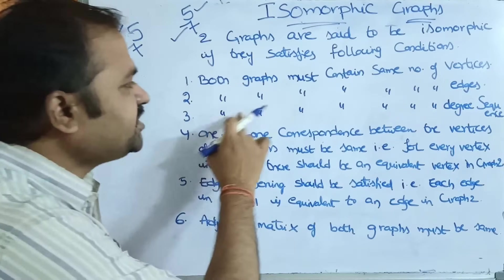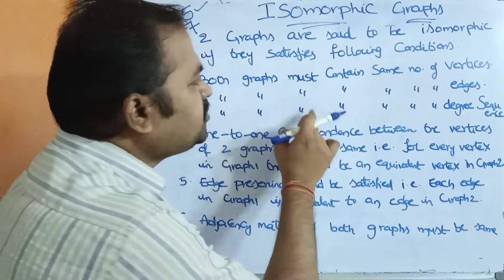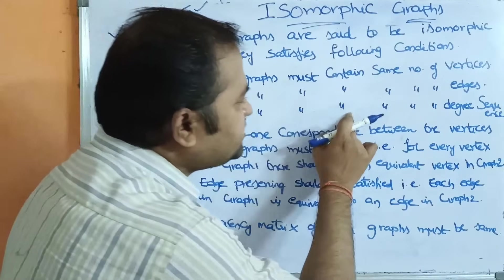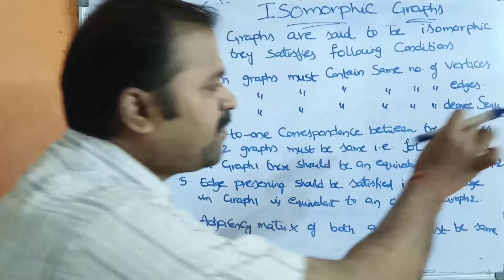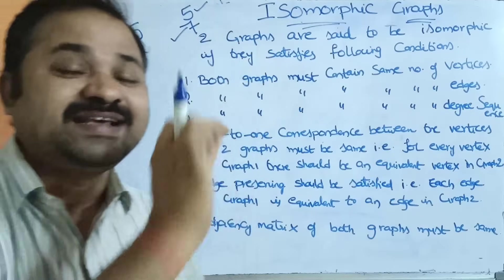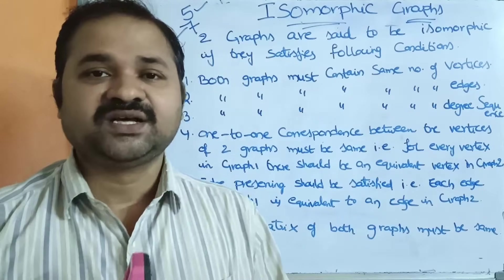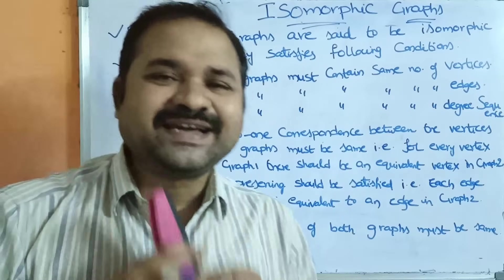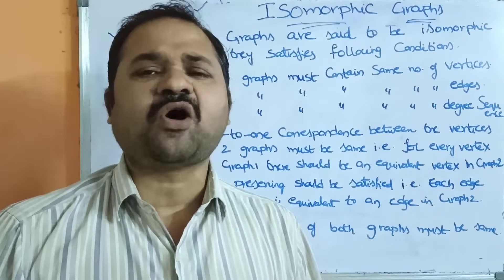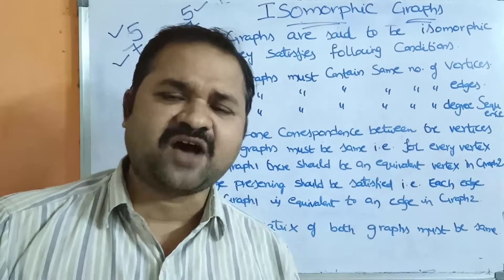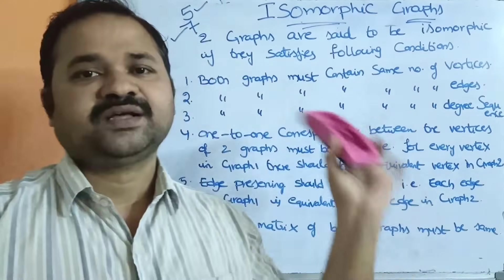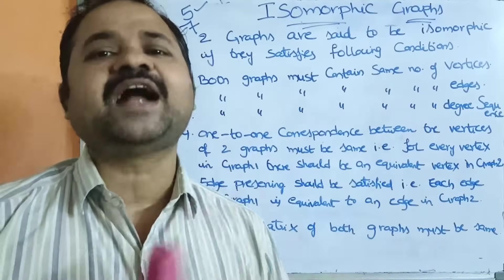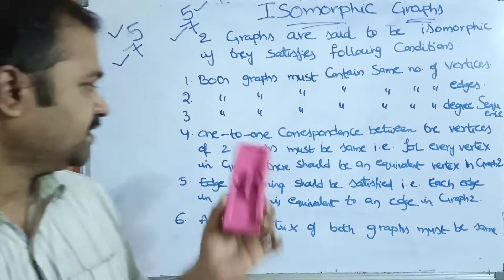The third condition is both graphs must contain the same degree sequence. So the degree sequence of both the graphs must be the same.